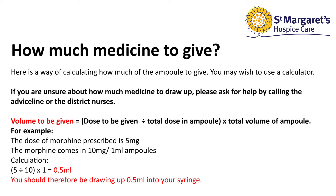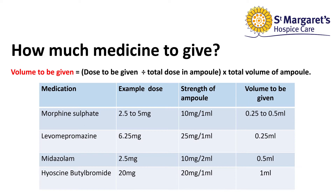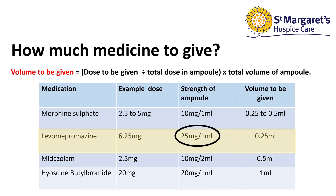Here is the equation again, along with some examples of the commonly used just-in-case medications. Let's try another example. If the prescribed dose of levomepromazine is 6.25 mg, the total dose in the ampoule is 25 mg. The total volume of the ampoule is 1 ml. To calculate the volume of medicine to give, divide 6.25 by 25 and multiply by 1. The answer is 0.25 ml.